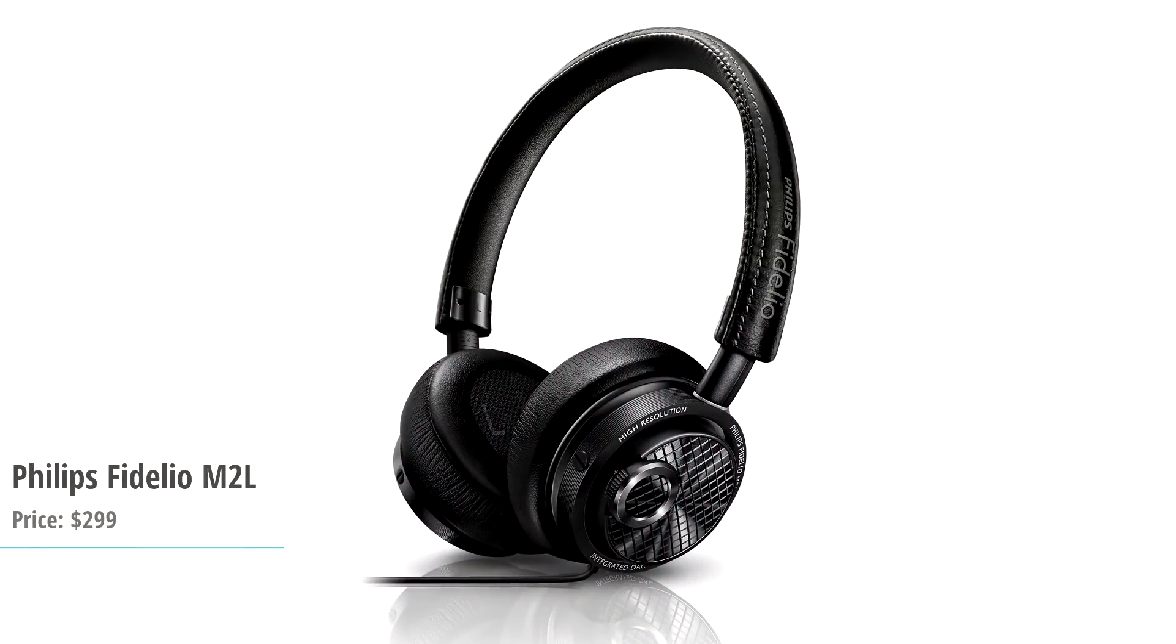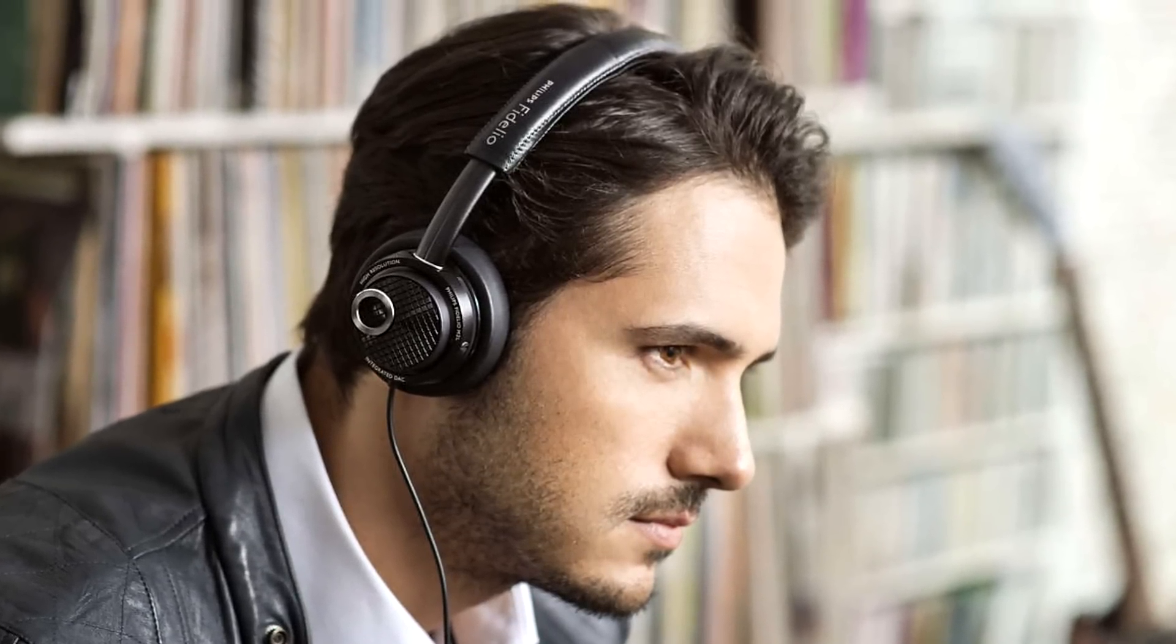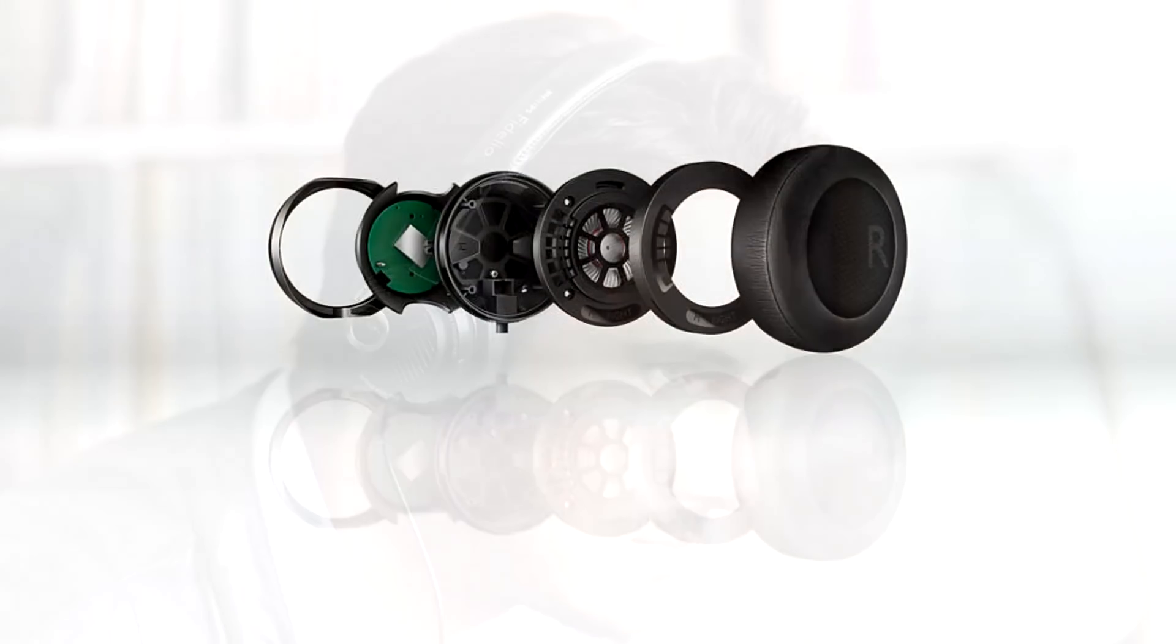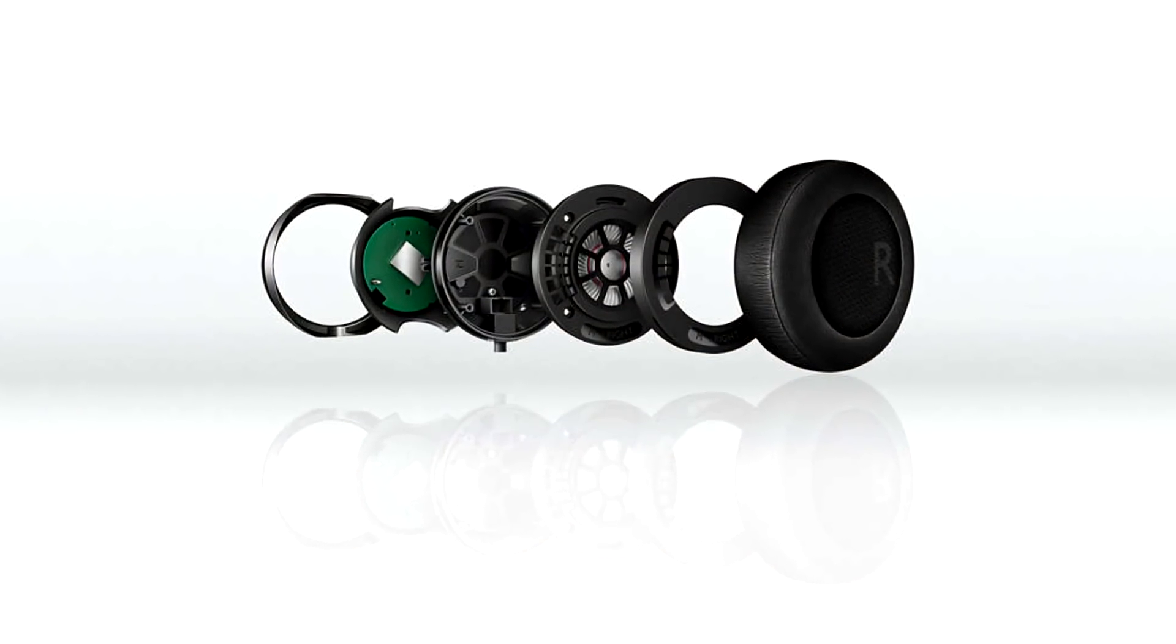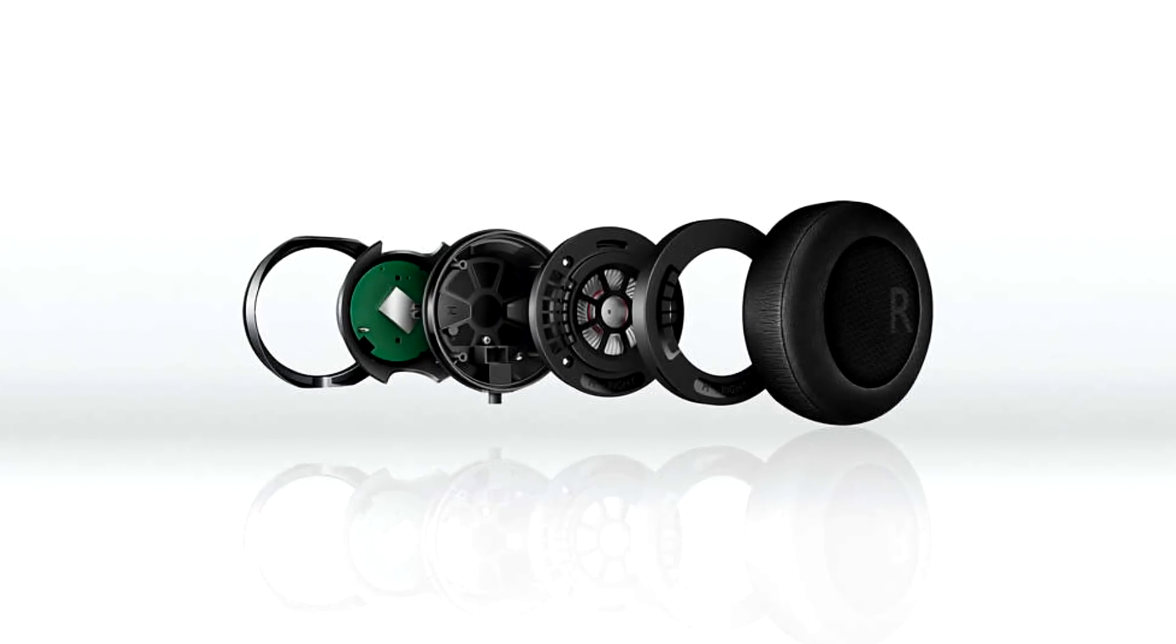The Philips Fidelio M2L is another model worth mentioning. What's special about it is the 24-bit 48 kHz digital to analog converter that is inside. There is also a built-in high-quality amplifier. When combined, these features should produce better, more powerful sound compared to what's coming out of an iPhone's standard headphone jack.